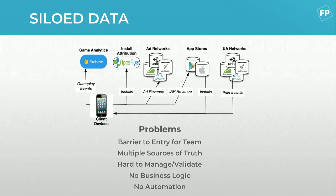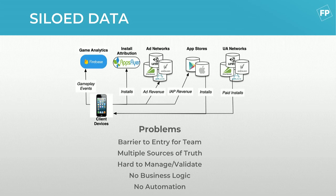There are also multiple sources of truth across these platforms, and it becomes very hard to validate data manually. One example of validation is checking if the number of installs the user acquisition networks are charging us for matches what we're actually seeing coming into the game. Business logic is also very hard to do manually — user acquisition needs to account for spend, install rates, revenue from ad networks, and early gameplay data to build a complete picture. And automating tasks is quite hard without consolidation.